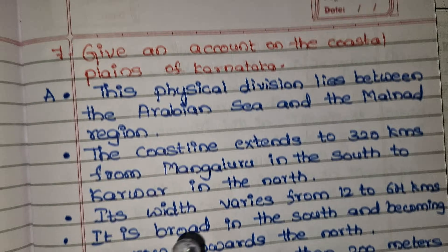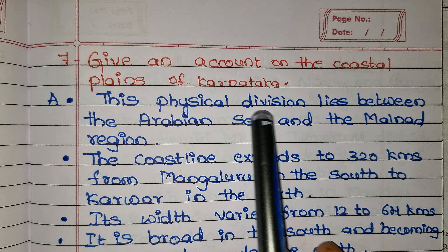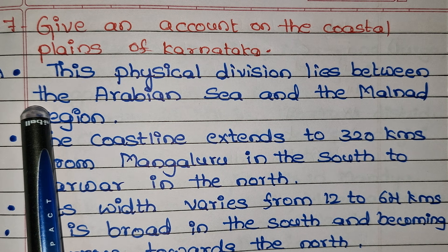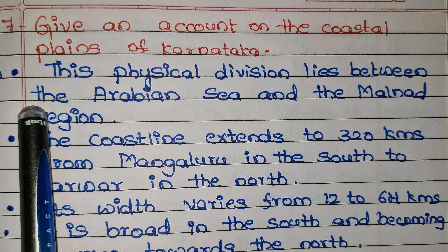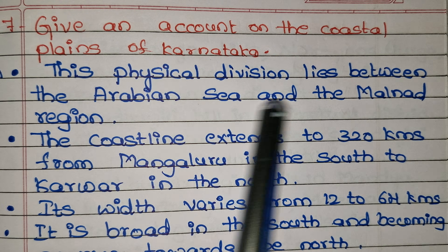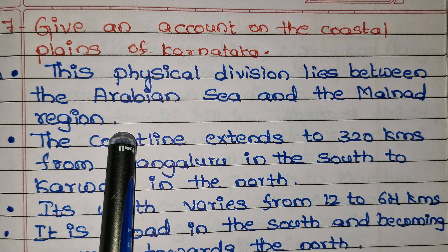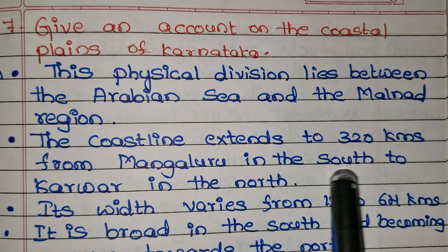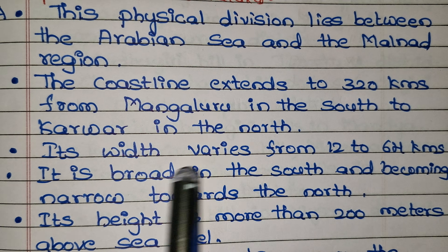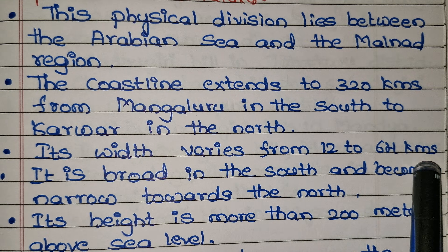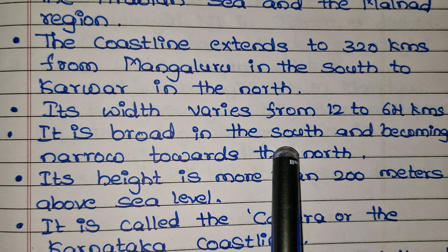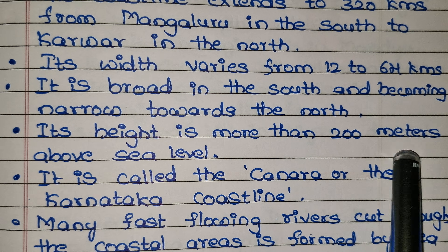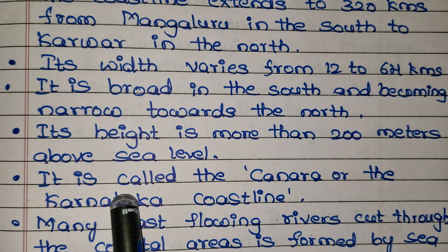Give an account of the coastal plains of Karnataka. This physical division lies between the Arabian Sea and the Malnad region. The coastline extends 320 kilometers from Mangaluru in the south to Karwar in the north. Its width varies from 12 to 64 kilometers — broad in the south and narrowing towards the north. Its height is more than 200 meters above sea level.